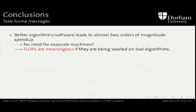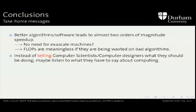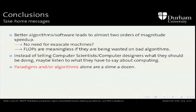Flops are absolutely meaningless as a notion of efficiency or scaling. Saying you used 60% of the machine because it was using 6% of peak flops means nothing — if your flops are being wasted on bad algorithms, they're wasted. We should really abandon that metric. Following up on yesterday's discussions about telling computer scientists what they should be doing — instead of telling us what to do, maybe listen to what we have to say about what you should be doing with your software. Paradigms and algorithms alone are a dime a dozen, but it's only through close collaborations that we actually make something you can use. So don't be afraid to enter close collaborations with the people in the CS department.